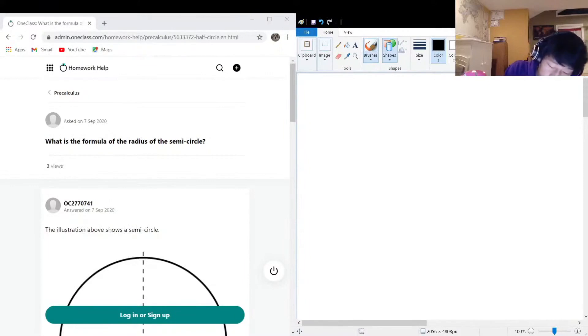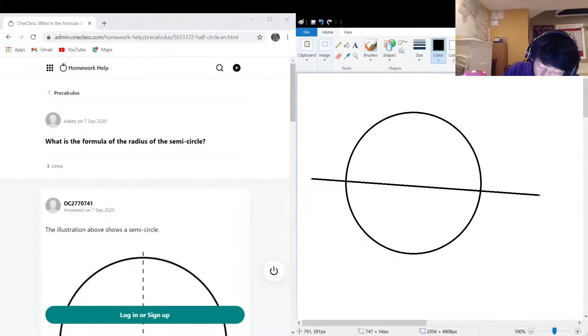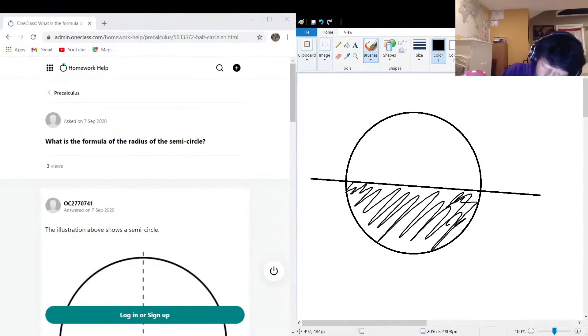Well, a semicircle, believe it or not, is a circle, but we're going to cut that in half. I'll actually draw a line through here, a straight line. So all of this is disqualified, and here in the blue we've got our semicircle.